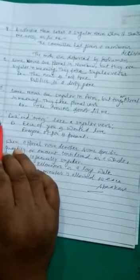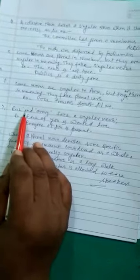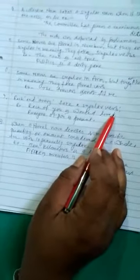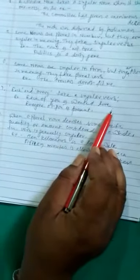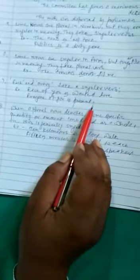Rule number seven. Each and every take a singular verb. As for example, each of you is wanted here. Another example, every one of you is present.